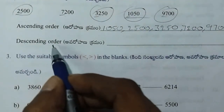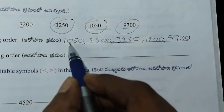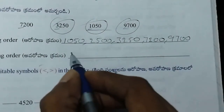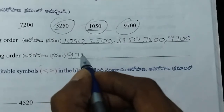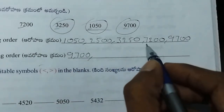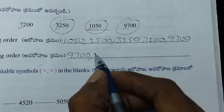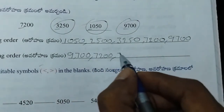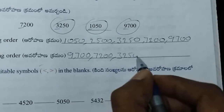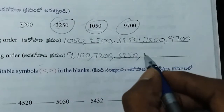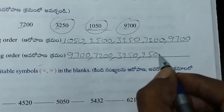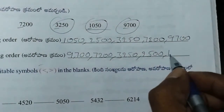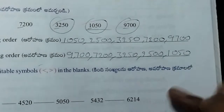For this, the table order is: 9,700; 7,200; 3,250; 2,500; 1,050.